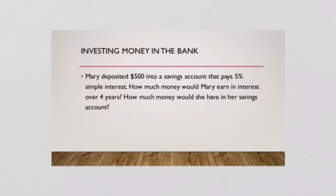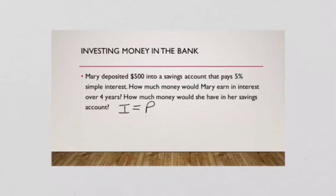Mary deposited $500 into a savings account that pays 5% simple interest. How much money would Mary earn in interest over four years? How much money would she have in her savings account after four years? So we simply write down the formula: I equals PRT. Then we have to fill it in — what was the original amount she started with? $500.